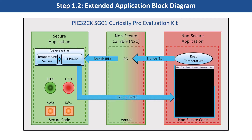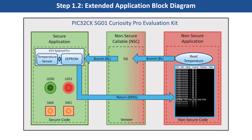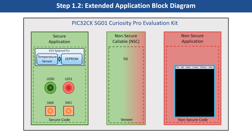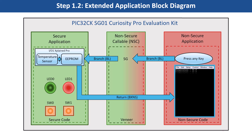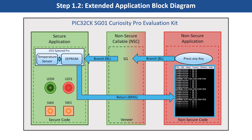The temperature readings are transferred to the non-secure mode application when it requests the secure application through the non-secure callables. The non-secure mode application requests the secure mode for the temperature values and prints them on the serial console once it receives from the secure mode application. Further, when it gets a request from the user in the form of a key press on the serial console, it will request the secure mode application to retrieve the last 5 stored temperature values in the EEPROM. The non-secure application prints the last 5 stored values on the console. Also, LED1 is toggled every time the temperature values are read from the EEPROM.